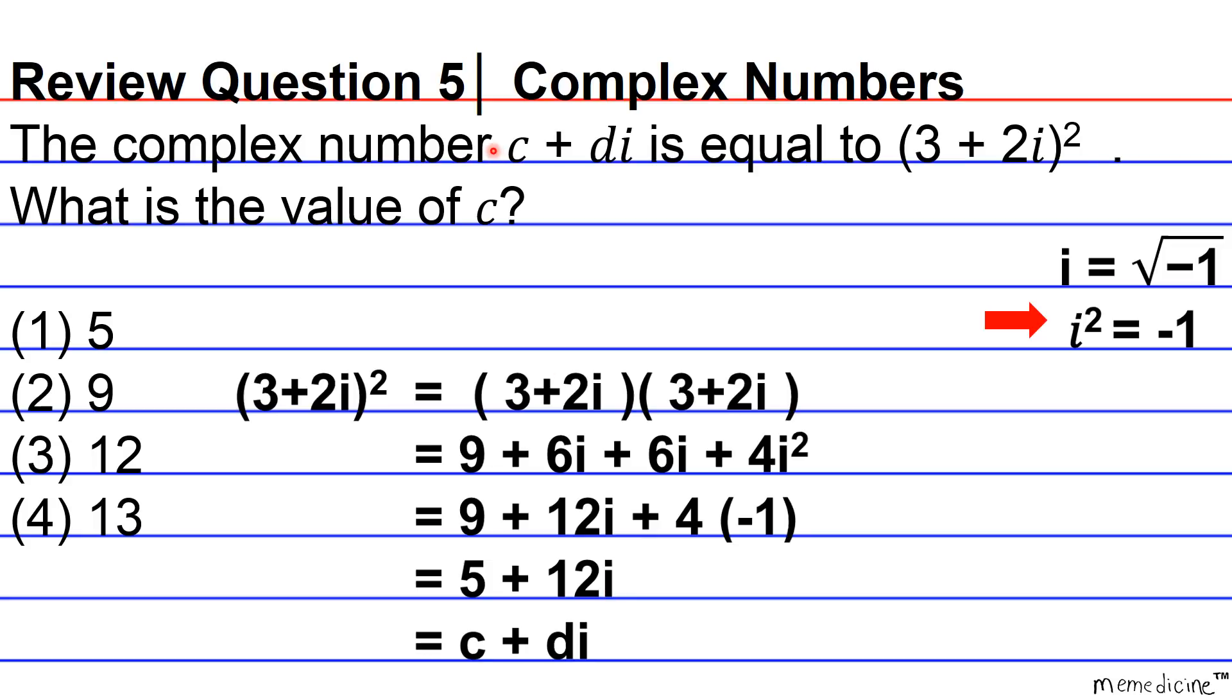And so here we have the format that was mentioned in the original question stem, c plus di. Hence, c is equivalent to 5. That means our answer choice 1 is the correct answer choice. Thanks for tuning in and good luck studying.